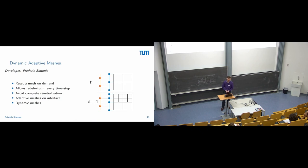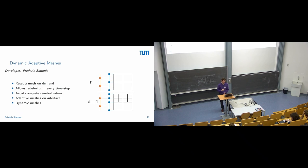Next is my topic: dynamic adaptive meshes. The idea is to reset the mesh on demand and allow redefining it potentially at every time step. preCICE currently is built on the assumption that meshes are static, so that you can derive communication patterns for new meshes and mappings. This changes the fundamental assumption of the complete library, which sounds easy but is a big modification. The result will hopefully be support for adaptive meshes at the interface boundary and full support for dynamic meshes in the future.